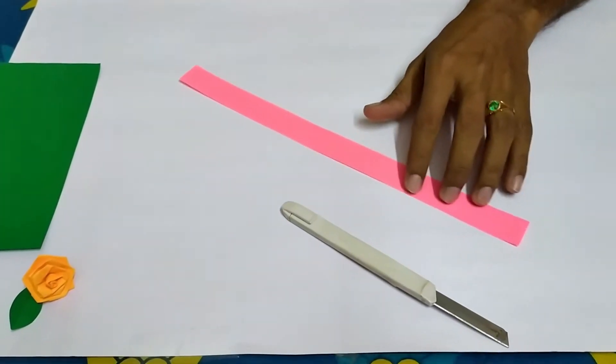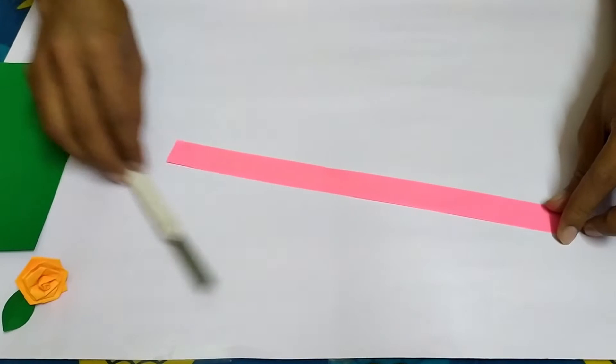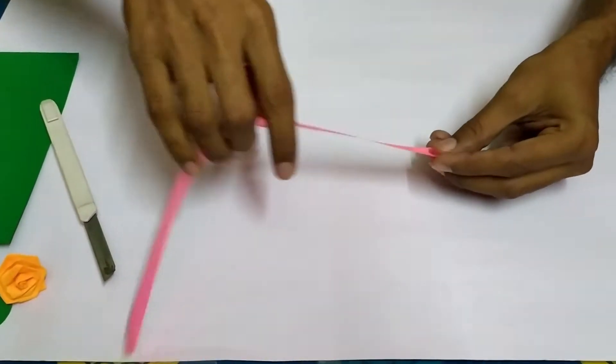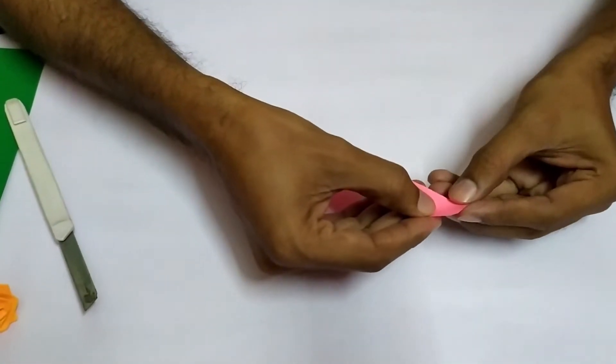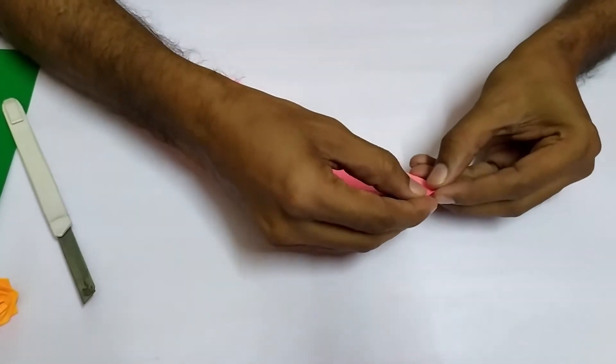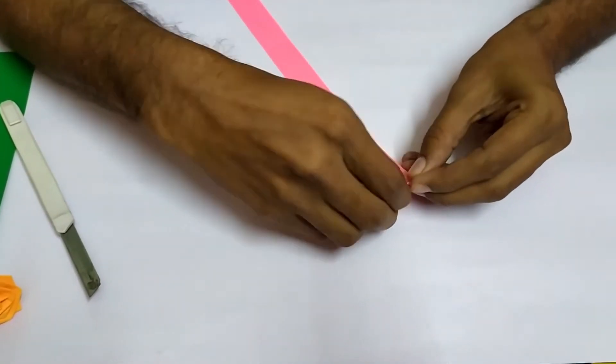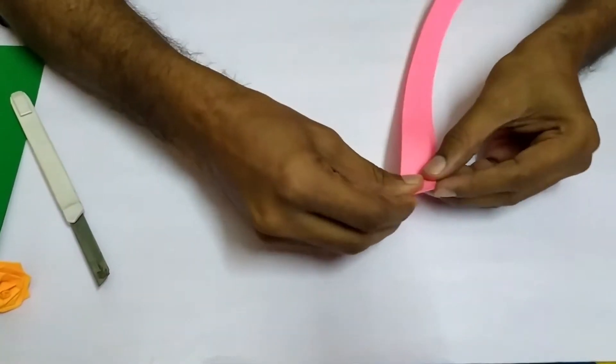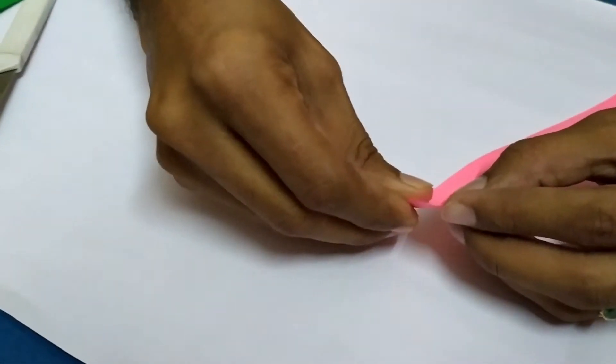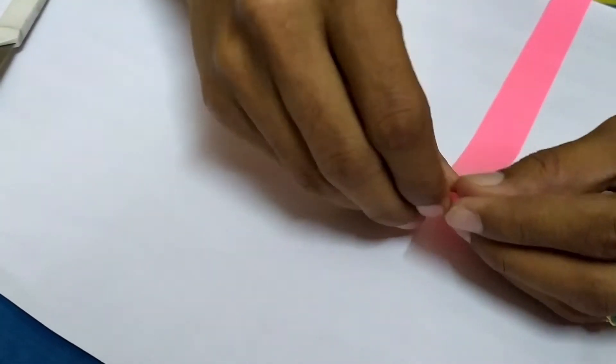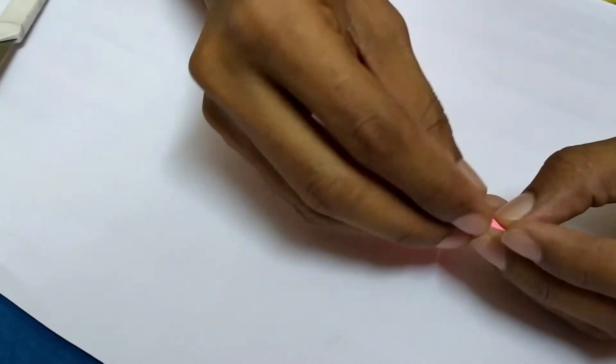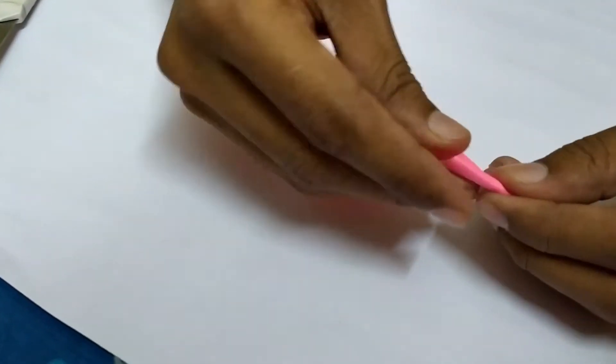Now we require only this one strip. Take the strip like this. Now look at this edge. We rotate this like this. This is the first one. Once you get this properly, then each and everything will be easy for you. Just rotate like this.